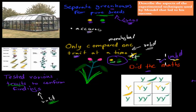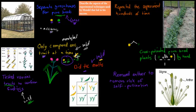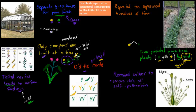When he cross-pollinated the purebreds, he did it by hand rather than relying on wind pollination. If he had relied on wind, something unintended might have happened. By doing it by hand himself, he could make sure that exactly the green plants were crossed with the yellow plants. This increased accuracy because there was no mistake — the wind couldn't accidentally cross-pollinate the wrong plants — and he did it precisely how he intended for each part of the experiment.